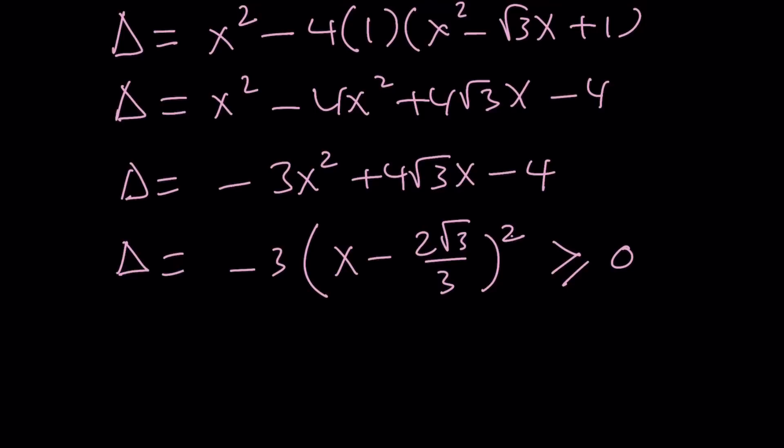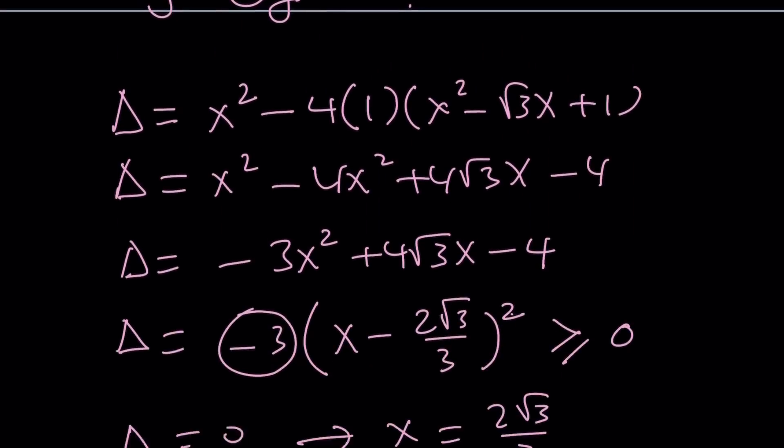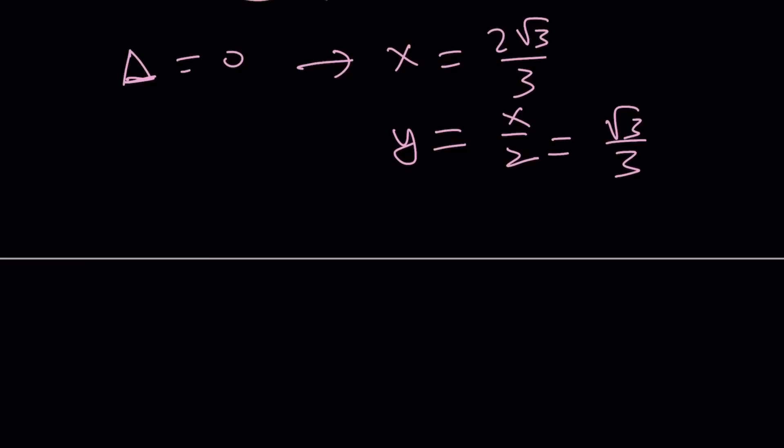But, it can be 0. Set the discriminant equal to 0. That's the only possibility, which implies x equals 2 root 3 over 3. This negative 3 doesn't matter, by the way. You can divide it by negative 3. And, y becomes x over 2, because here, if this becomes 0, if you write the quadratic formula, we'll get it. That's going to be root 3 over 3.